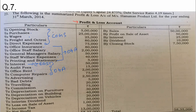Next, tell me about advertising, bad debt, traveling expense, commission paid — what are these four related to? Yes, absolutely correct. That is selling and distribution expense. All these four are selling and distribution expenses.